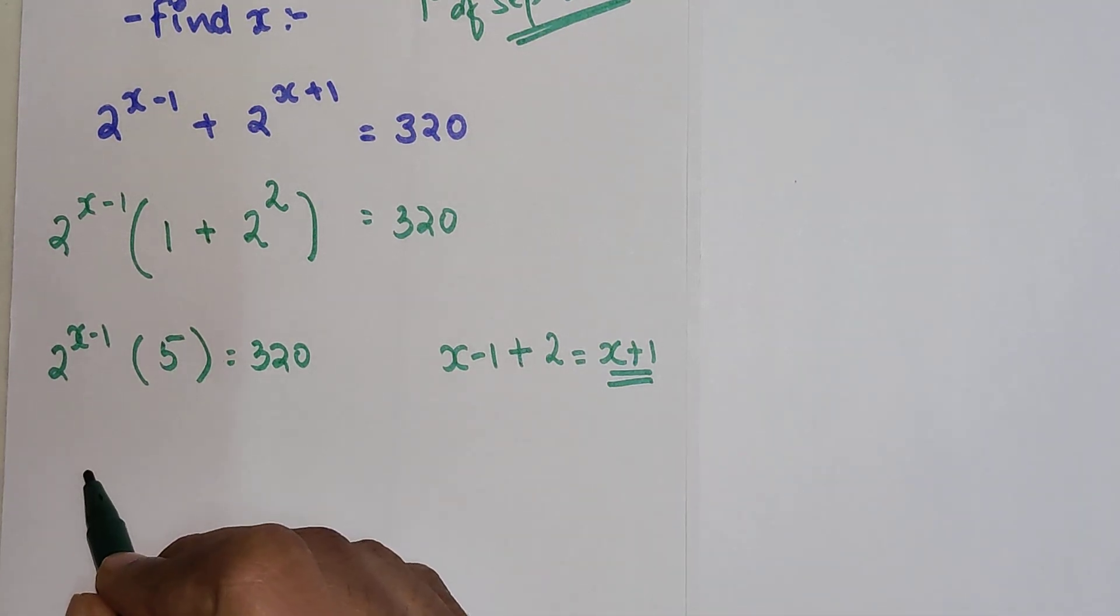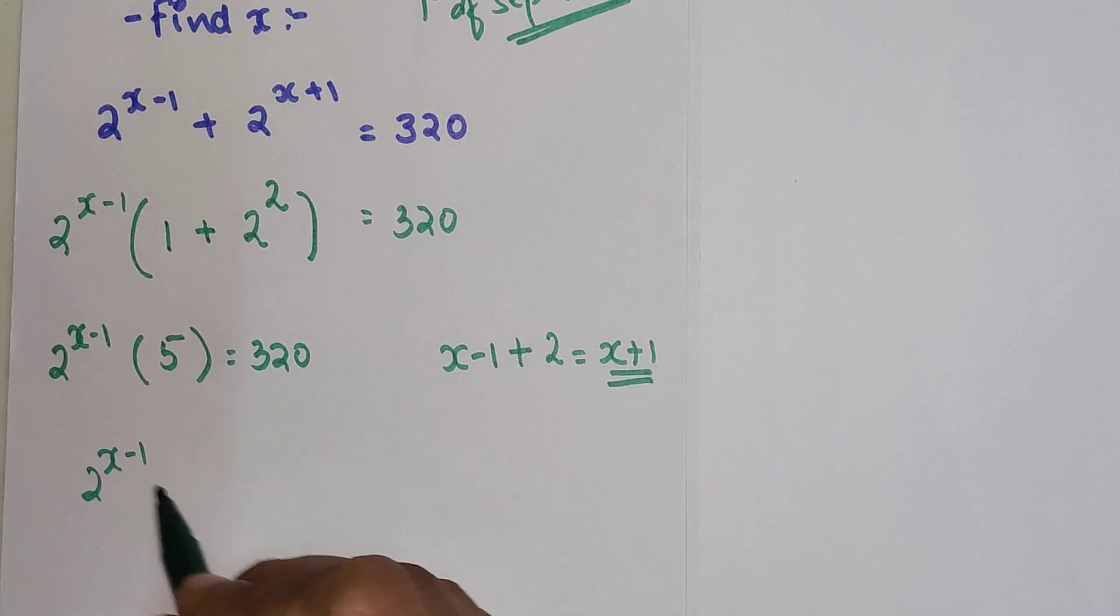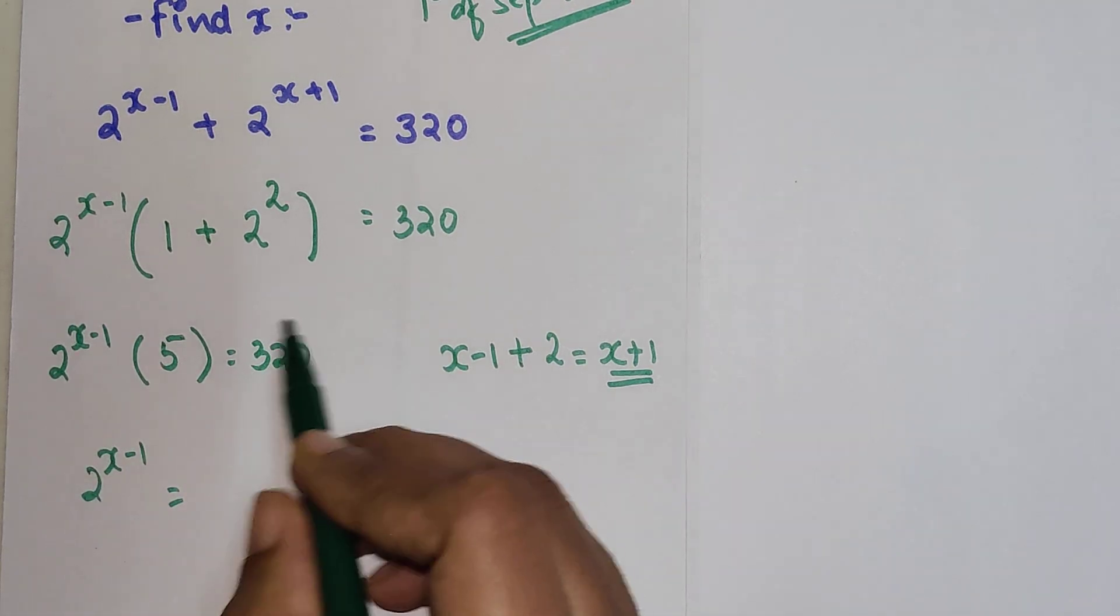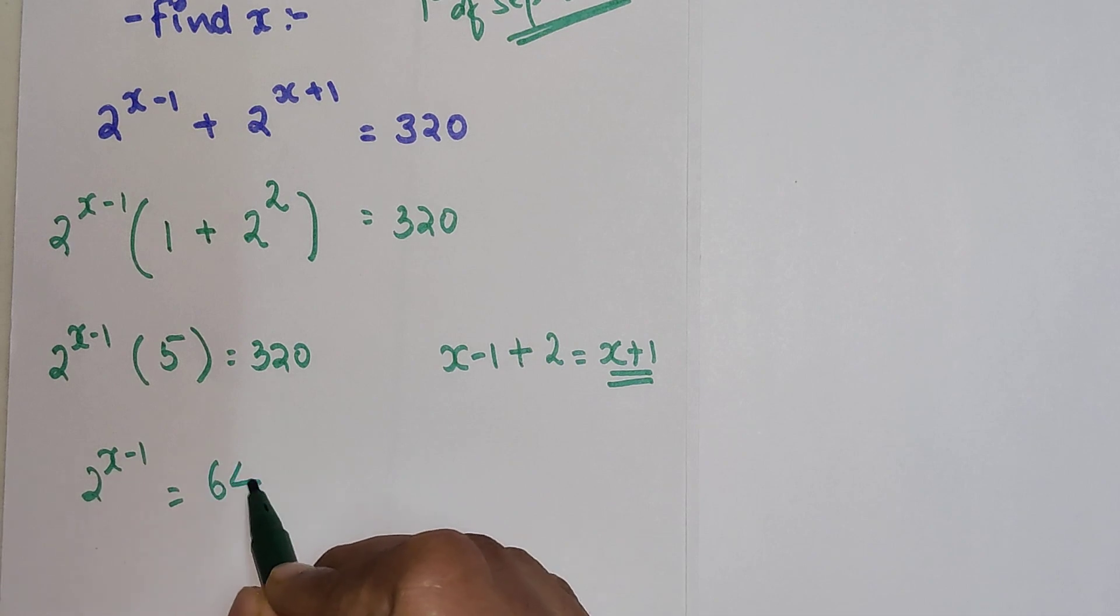So here we have 2 raised to x minus 1. Dividing both sides by 5, when I divide 320 by 5, I am left with 64.